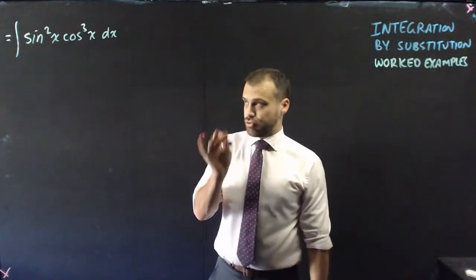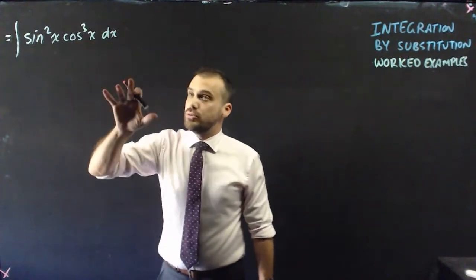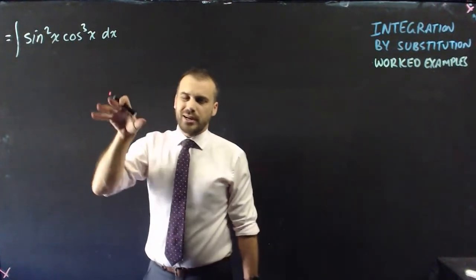Now, this one's got a really weird trick to it. So this is integral sine squared x cos cubed x with respect to x. And you might say, well, they both look really a bit complicated.